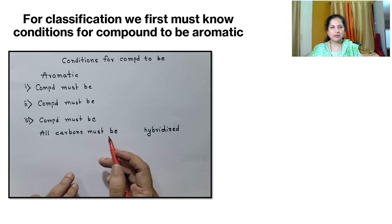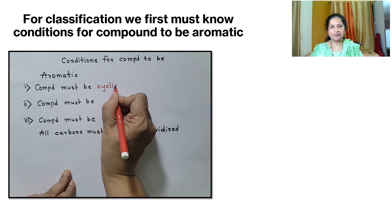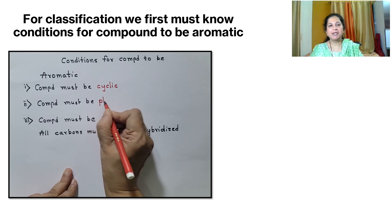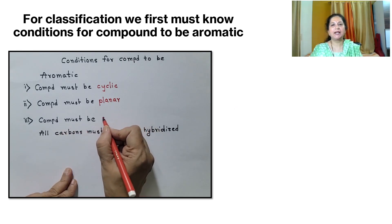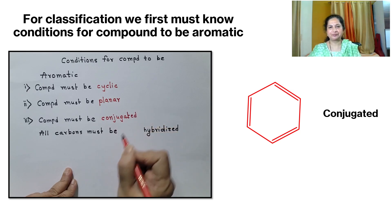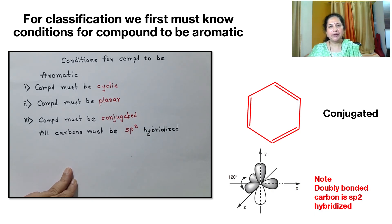Before we start solving problems, we first must know what are the conditions for a compound to be aromatic. So let us check the criteria. Take your writing material and watch the video. The first condition is that the compound must be cyclic — carbon should form a ring. The second condition is the compound must be planar — all carbons must be in one plane. The third important condition is that the compound must be conjugated, meaning it should contain alternate single and double bonds. This same condition means all carbons must be sp2 hybridized, since every doubly bonded carbon is sp2 hybridized.